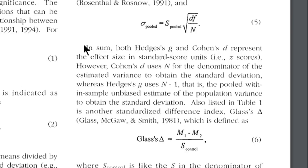And Rosnau and Rosenthal write, In sum, both Hedges' g and Cohen's d represent the effect size in standard score units, true in z-scores. However, Cohen's d uses n for the denominator of the estimate of variance to obtain the standard deviation, sigma, the population standard deviation,